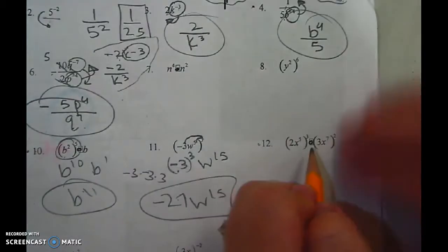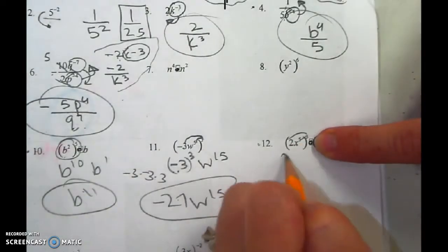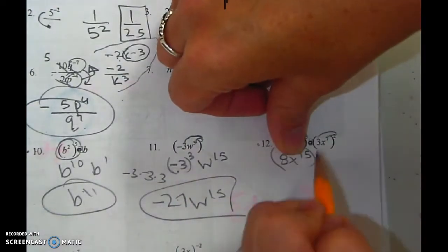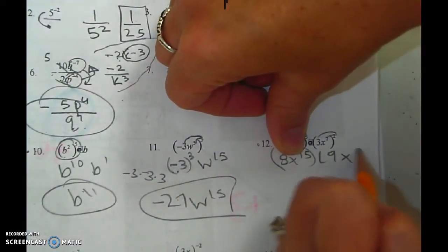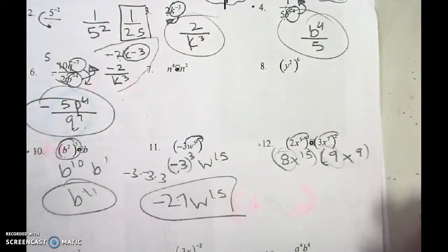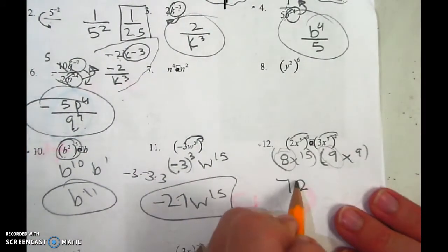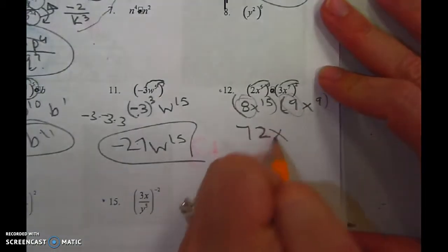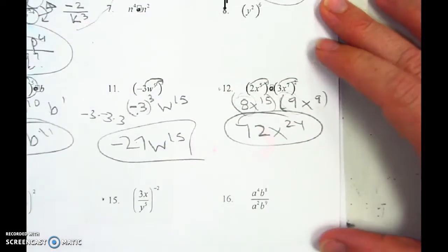Number 12. Take care of this. Give, give. 8x to the 15th. Take care of this. Give, give. 9x to the 9th. Now, just like you would normally multiply 8 times 9, it's 72. But this chapter is exponents, so it's the exponents that when you multiply, it really means you add. So that's going to be x to the 24th.